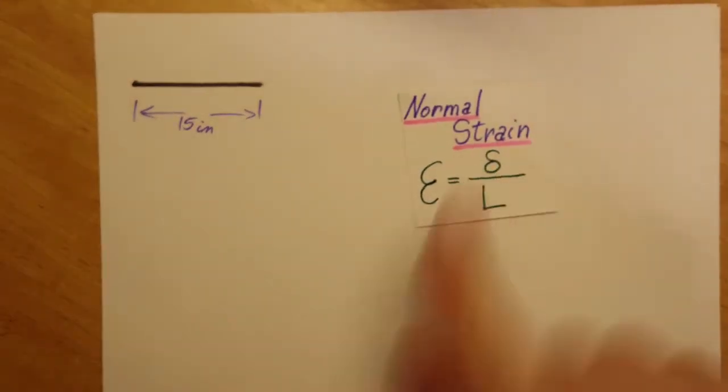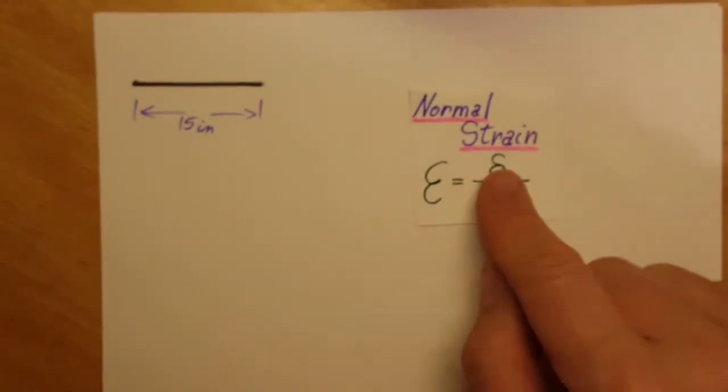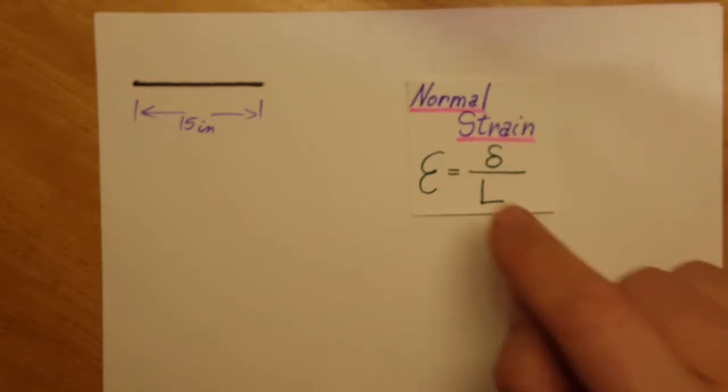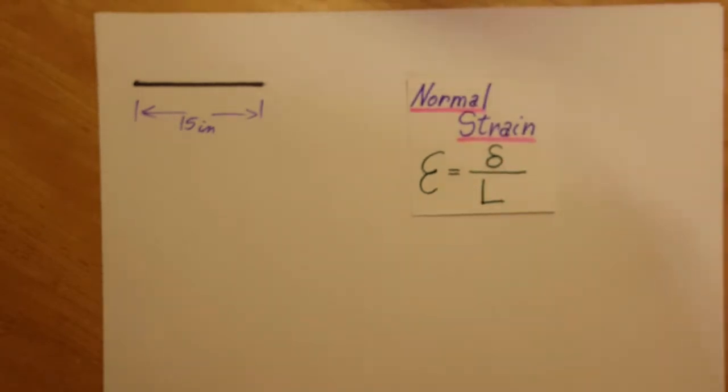Alright, so they want us to find the normal strain. This is our formula for it: E equals delta, the amount of change, over the original length.